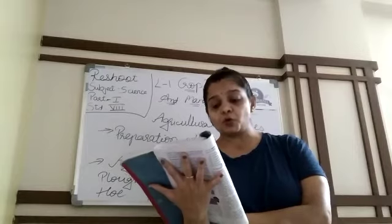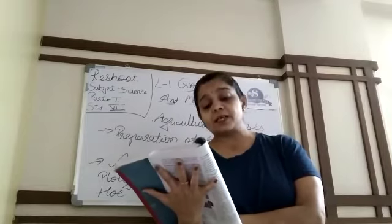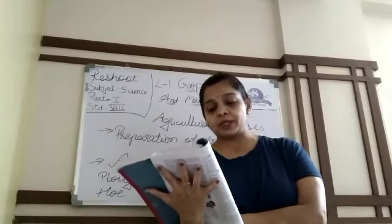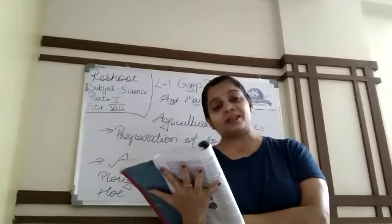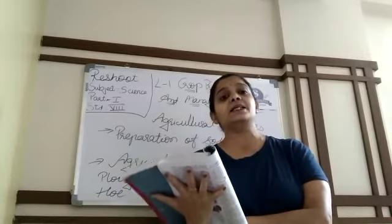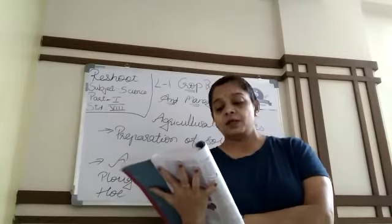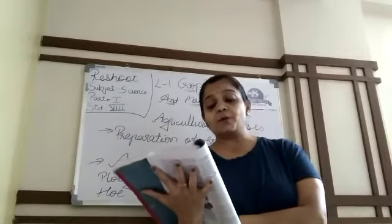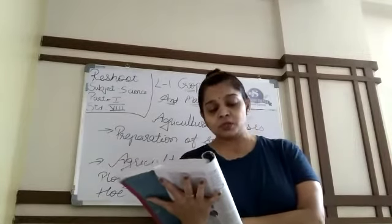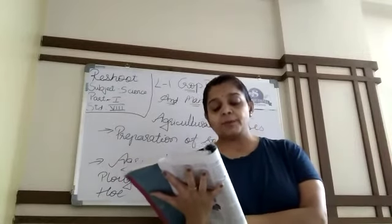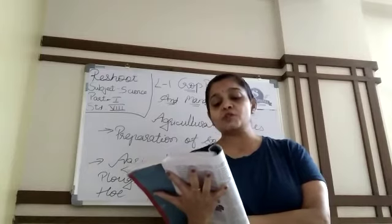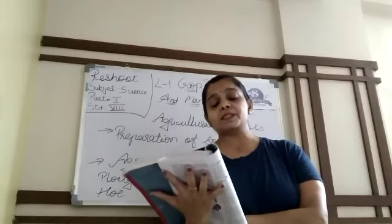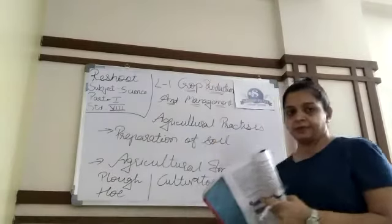Before sowing the seeds, it is necessary to break soil clumps to get better yield. Yield means growth. This is done with the help of various tools. The main tools used for this purpose are plow, hoe, and cultivator.